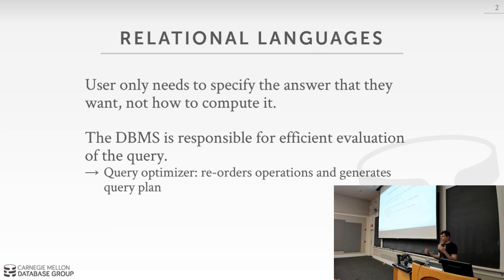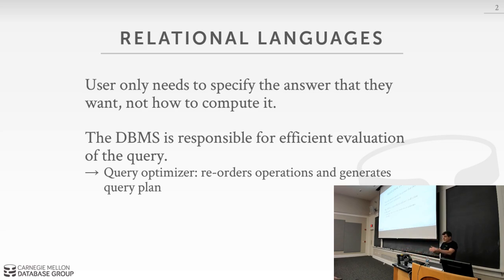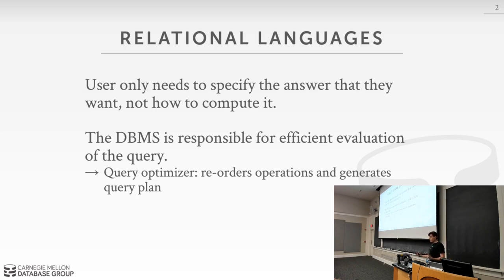The way to think about this: say we want to sort our data. If we have to tell the data system exactly what to do, we have to provide it with the quicksort or bubble sort algorithm. But with a high-level declarative language, we just say we want you to sort this — we don't care how you actually do it, but this is the answer that we want. This is one of the advantages of using SQL or declarative languages. We don't have to tell the data system exactly how to do things. It can figure out the most optimal way to execute the query based on the data and hardware available.